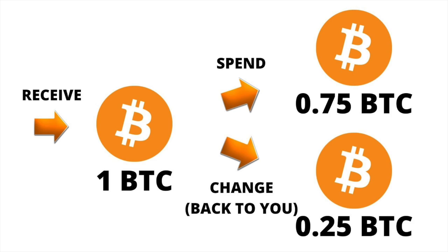In this example, somebody has received one Bitcoin as one UTXO into their wallet, and later spent out to another individual and gotten some change back.